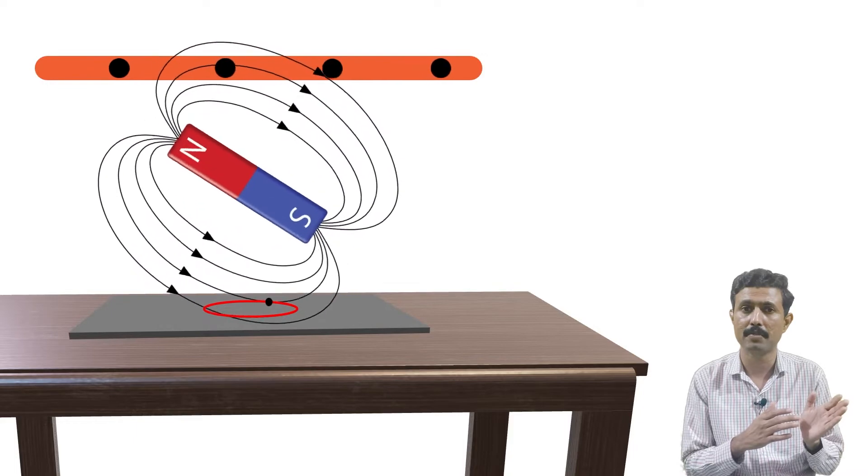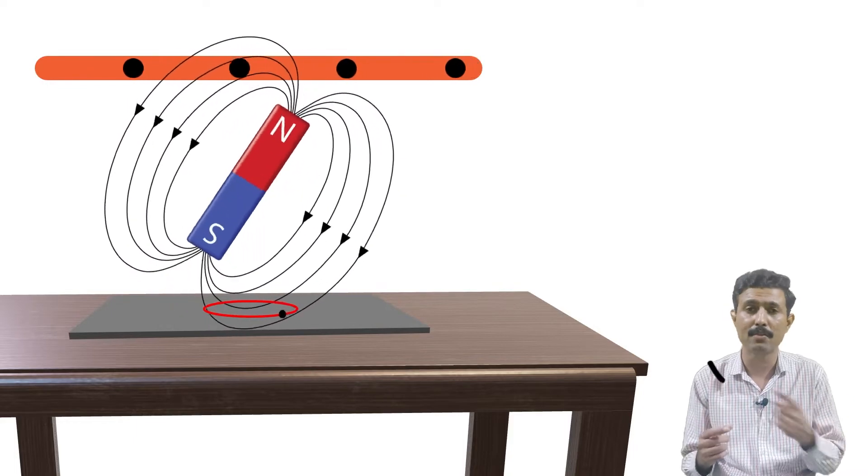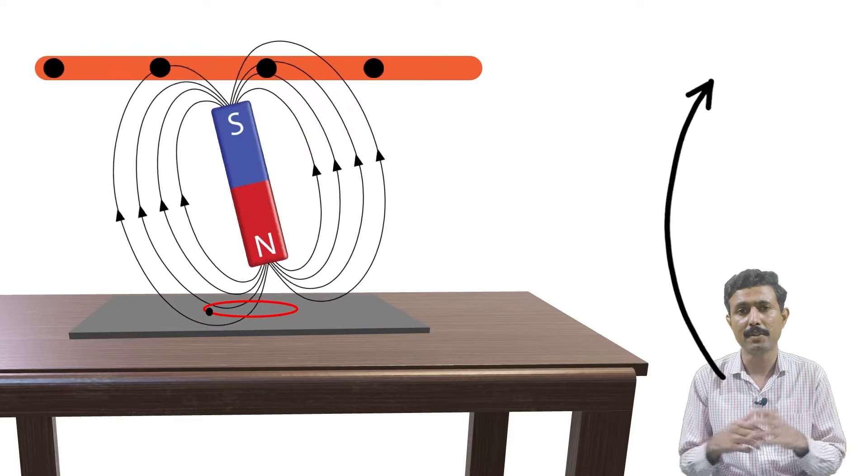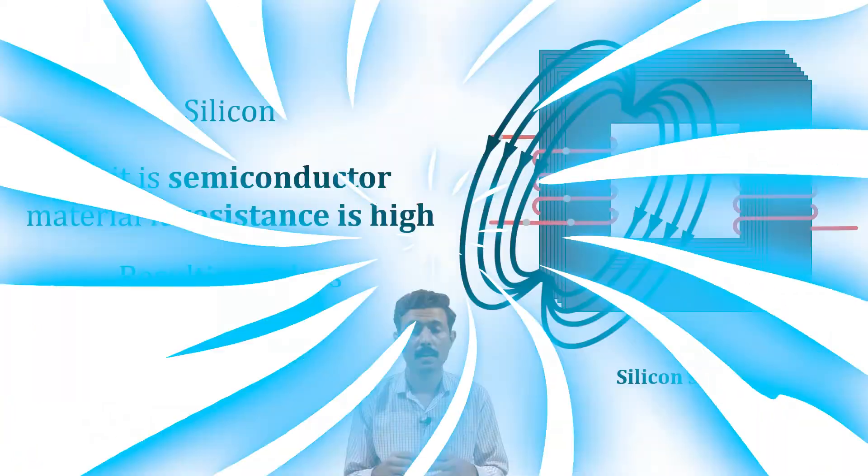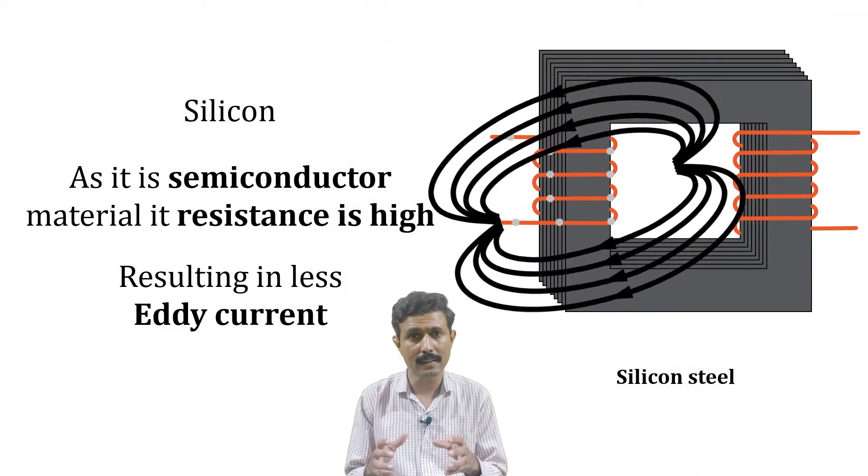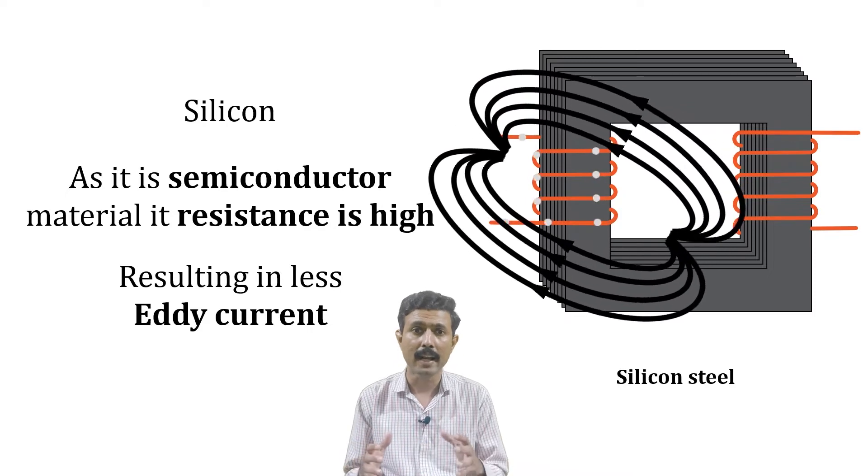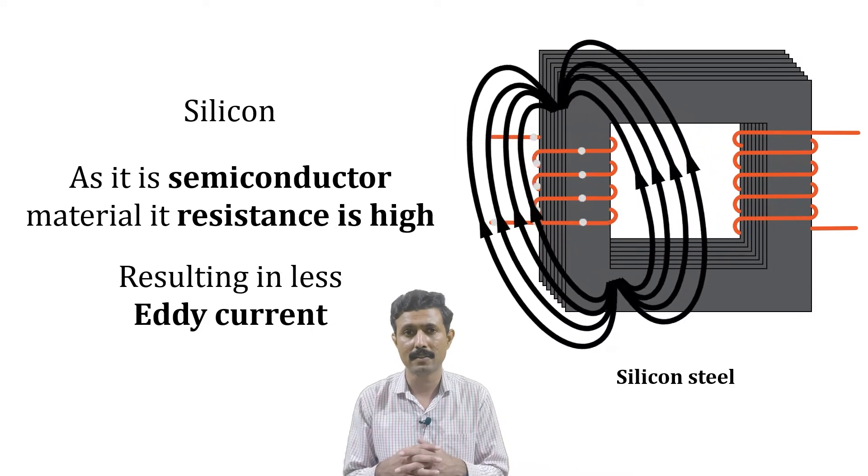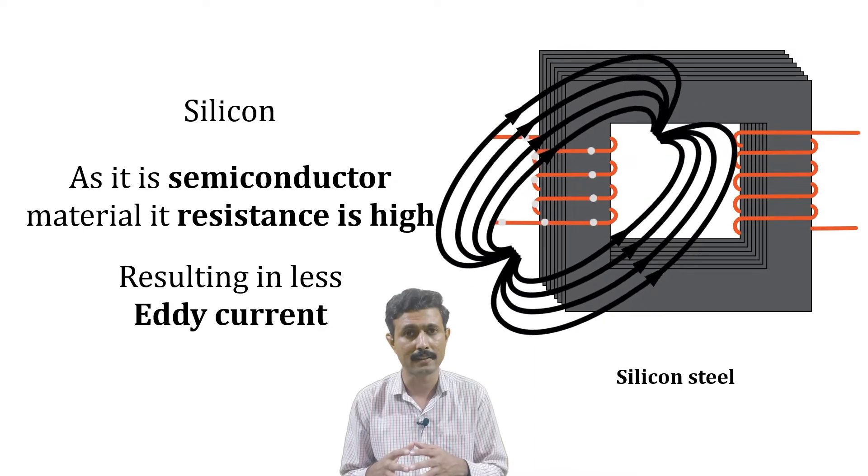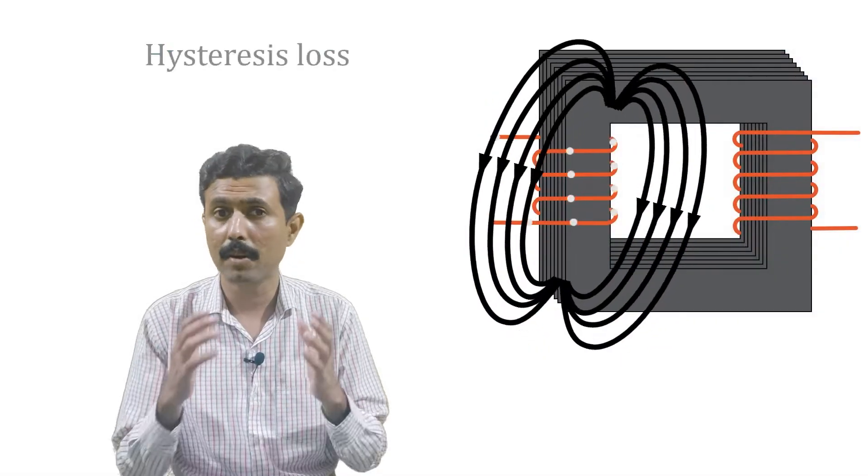How to reduce eddy current loss—that we have discussed in our previous video. If you want to explore that thing, then you can check out this video to understand how to reduce the eddy current loss. Now here the silicon content in silicon steel material helps in increasing the overall resistance of the core, which helps in reducing the eddy current.